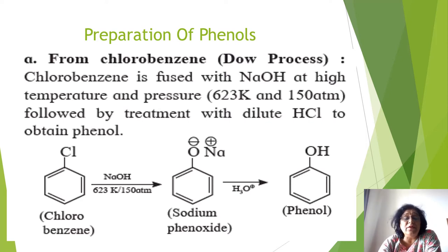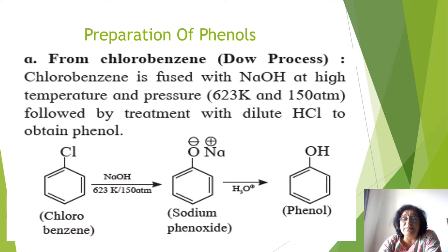So chlorobenzene is fused with NaOH at high temperature and pressure — 623 Kelvin and 150 atmosphere pressure — to get sodium phenoxide (benzene ring with O⁻Na⁺). Hydrolysis with dilute HCl gives phenol. That is how from chlorobenzene, through Dow's process, you obtain phenol.